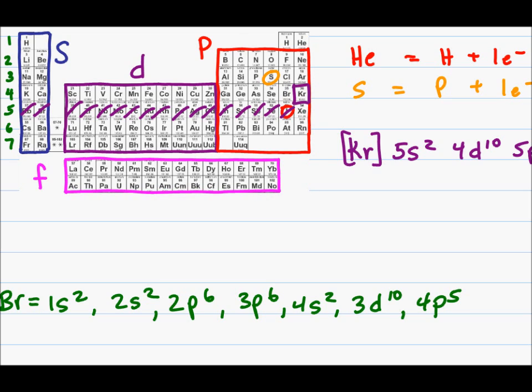We can now do the same thing for francium. Notice that francium comes after the noble gas, radon, so I will put that in brackets. And after radon, I simply have 7s1. Now isn't that so much easier?